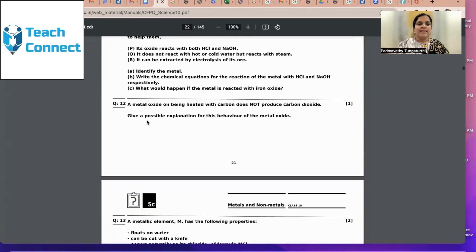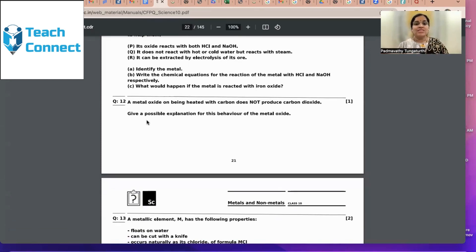Question number 12. A metal oxide on being heated with carbon does not produce carbon dioxide. Any metal oxide reacting with carbon, if it reacts, it has to produce carbon dioxide. That means, obviously, there is only one reason. Metal oxide is at a higher reactive status and carbon is a free element at a lower reactive status. Therefore, metal oxide will never replace the free element carbon. Higher element replaces the bottom element.